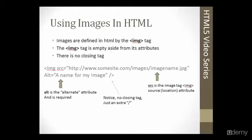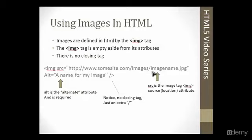Images on an HTML page are defined by the image tag, the IMG tag. The image tag is empty aside from its attributes — there's no content in between and there's no ending tag. The most important attribute, which is needed, is the source attribute, abbreviated SRC. This points to the physical location of the image you want to display. You could use an absolute path, which is the entire URL, or a relative path depending on where your HTML file and image file are on your server.